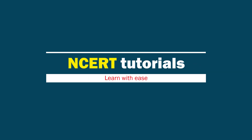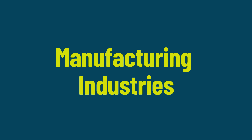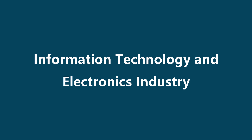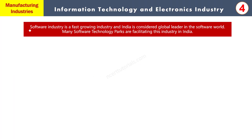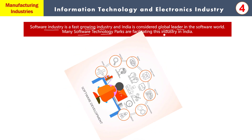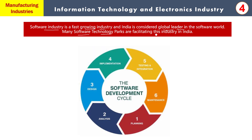Hello and welcome to NCRD Tutorials. Class 10 Geography Chapter Manufacturing Industries का यह 4th part है और इस part की theme है Information Technology and Electronics Industry. So let's begin the tutorial. हम लोग धीरे धीरे Digital World की तरफ बढ़ रहे हैं और software industry growing fast है। इस part में हम Software Industry के बारे में पढ़ेंगे और एक Map भी fill up करेंगे कुछ Software Technology Parks को। पहला topic है कि भारत में इस industry का क्या importance है।